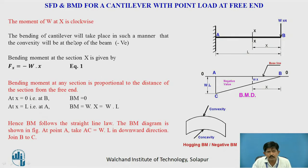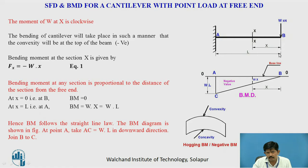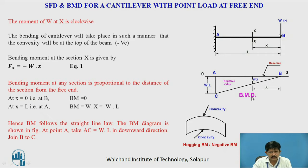Now we will see the bending moment diagram for the same beam. The section is at distance x from the free end, and the bending moment at this section is Mx = −W·x. At x = 0, that is at point B, the bending moment is zero (W × 0 = 0). At x = L, that is at point A, the bending moment is −W·L. Since it is negative, it is drawn below the baseline. Joining point C to point B gives the bending moment diagram.